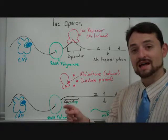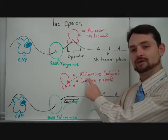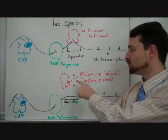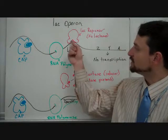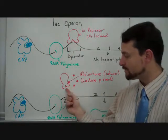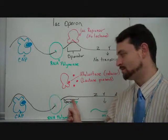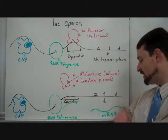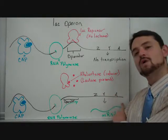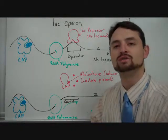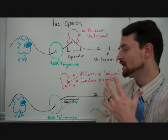When there is lactose, the cell will produce an inducer called allolactose. Allolactose will bind to the repressor. It will change its shape. See, it's a little bit wider here, narrower here. That won't be able to bind to the operator anymore. So, RNA polymerase will proceed, make mRNA from the lac Z, the lac Y, and the lac A genes, and then produce the enzymes that the cell needs to break down lactose to produce energy.